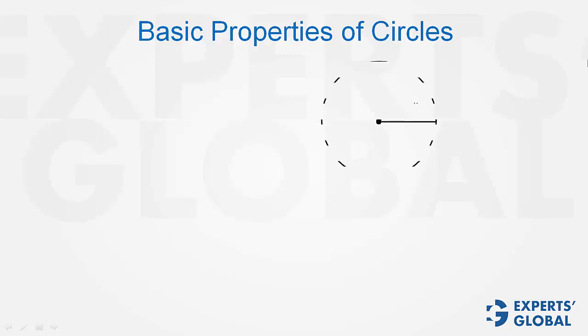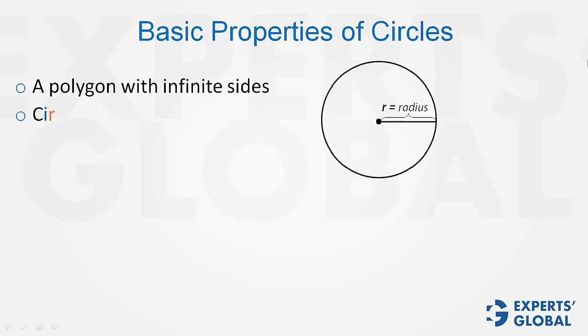Basic Properties of Circles. A polygon with infinite sides. Circumference upon diameter is a constant, which is pi. That is how pi came into existence.